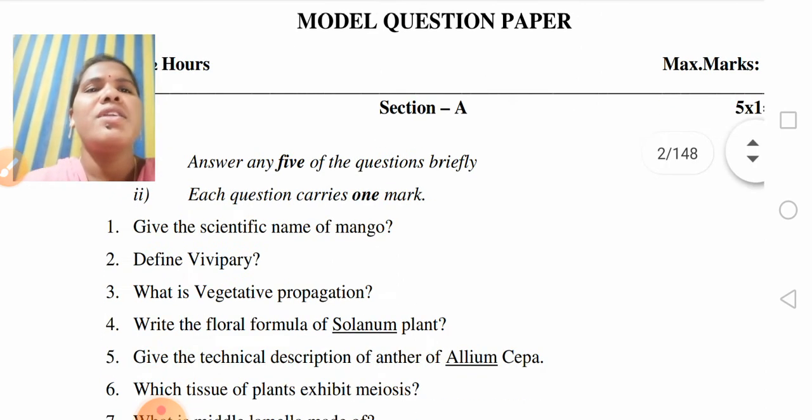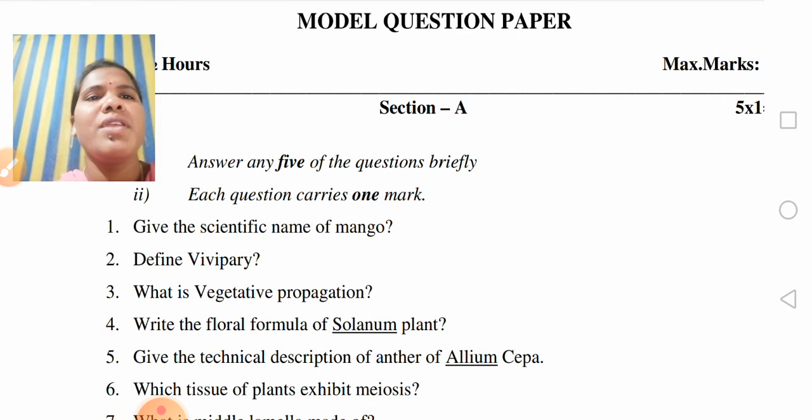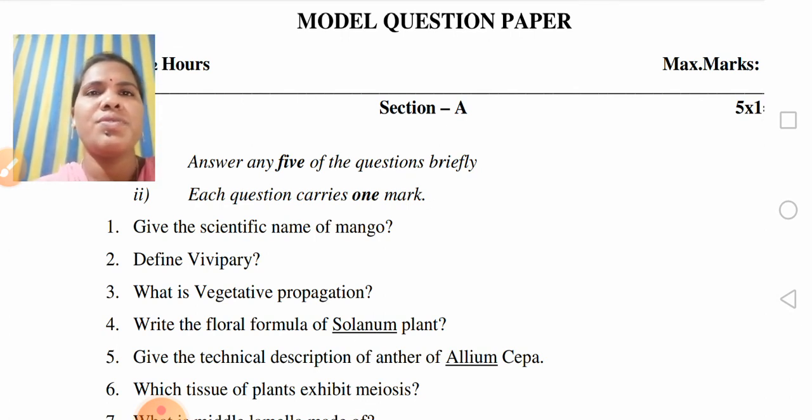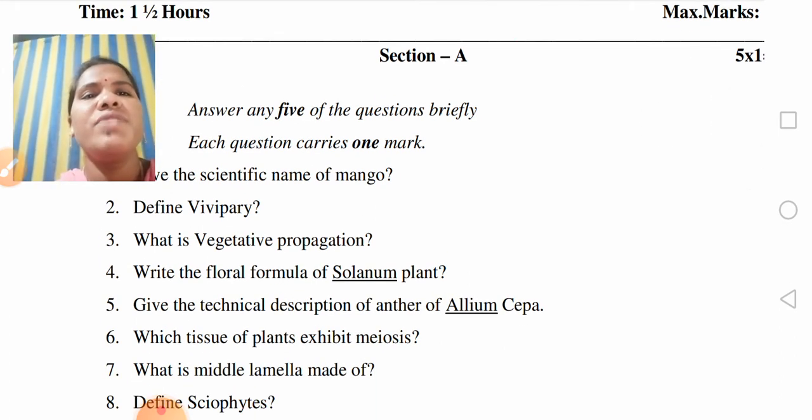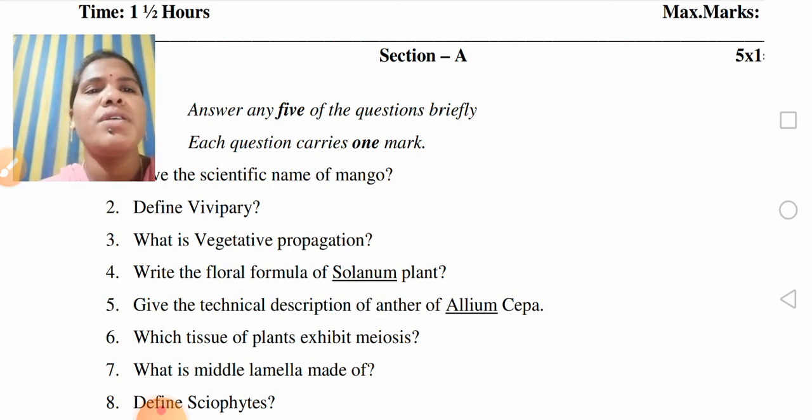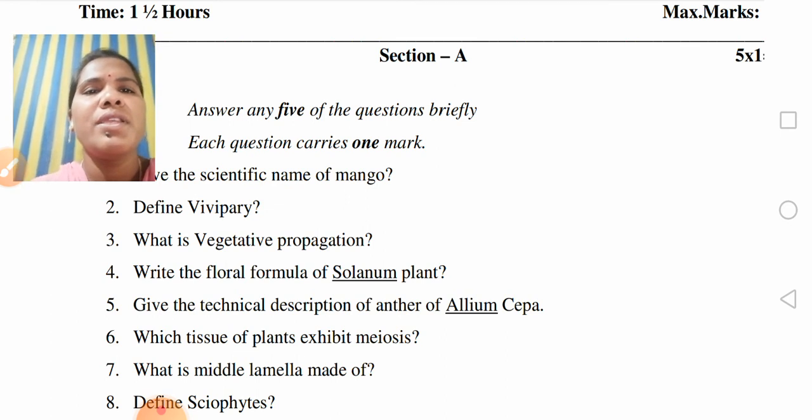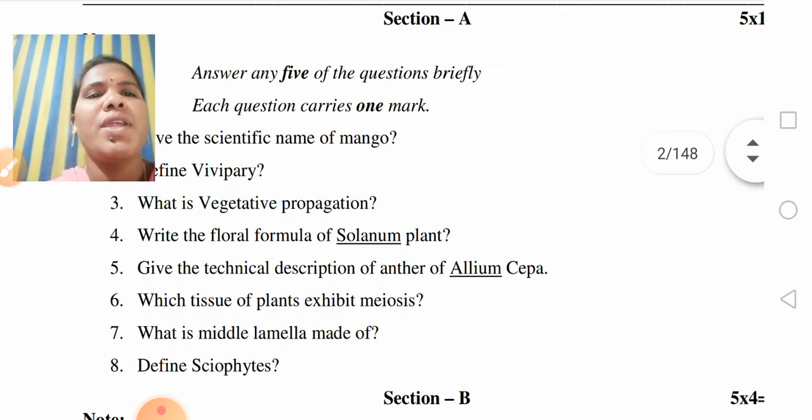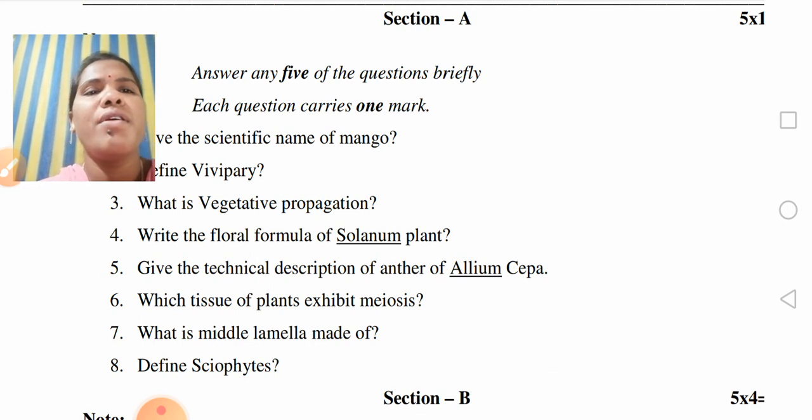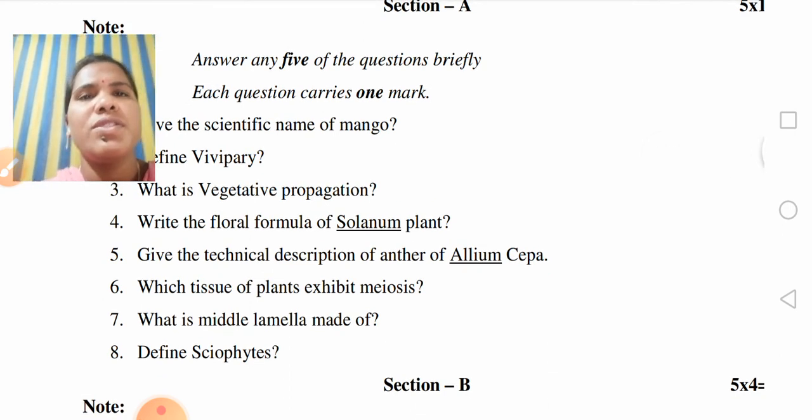Let's move on to the session. Section A: answer any 5 of the questions briefly. Very short answers questions. Give the scientific name of mango. Define vivipary. What is vegetative propagation? Write the floral formula for Solanum plant. Give the technical description of anther of Allium cepa.